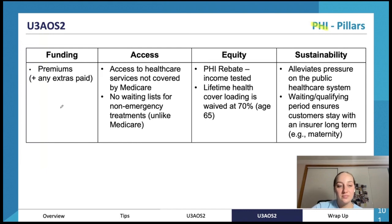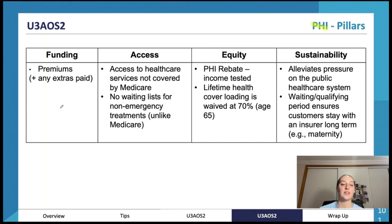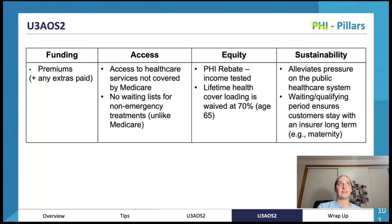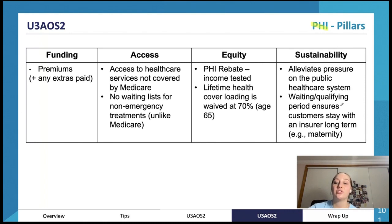Private health insurance is not funded by the government — individuals pay their own premiums depending on their chosen level of cover. Access: it enables more access to the public health system by reducing pressure on Medicare, and provides access to services not covered by Medicare. Equity: there's the private health insurance rebate, which is income-tested. Sustainability: it alleviates pressure on the public healthcare system, and waiting or qualifying periods ensure customers stay with an insurer long term.